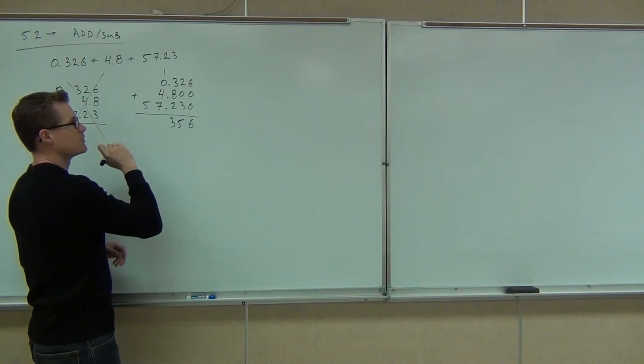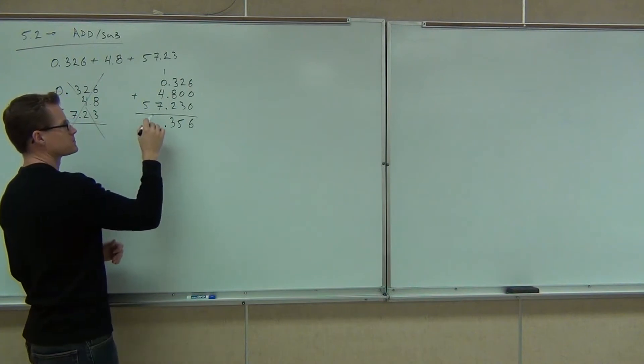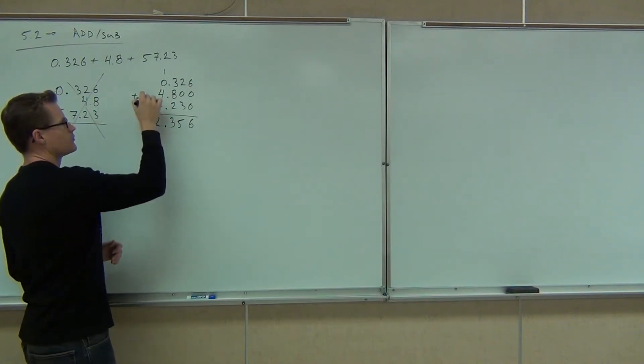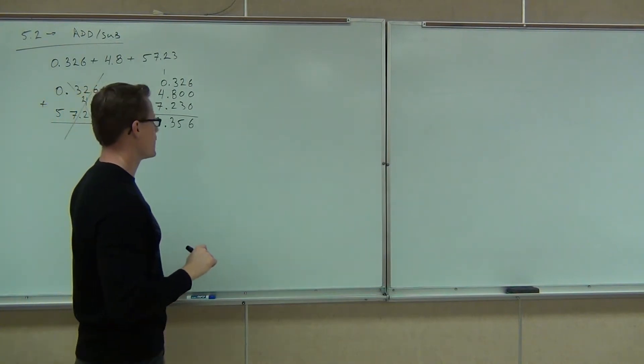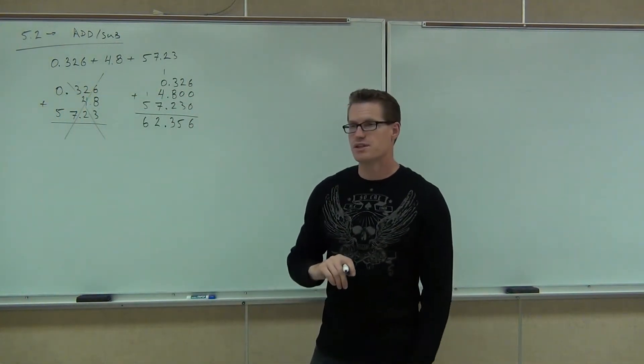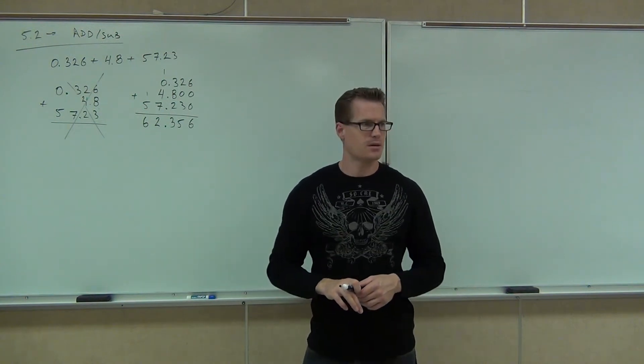Decimals, straight down. How many ones do we have? Twelve ones. Twelve ones, that makes it ten. So we get 62.356, or 62 and 356 thousandths. Feel okay about that? Yes.